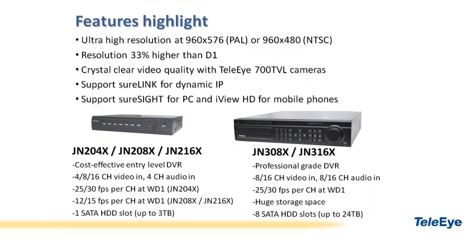Let me introduce the JN series to you. They are JN200 and JN300 series. Both of them are designed for ultra high resolution recording. The maximum resolution is 960x576 for PAL and 960x480 for NTSC, which is 33% higher than D1. It shows crystal clear video quality when using the TeleEye 700 series cameras.